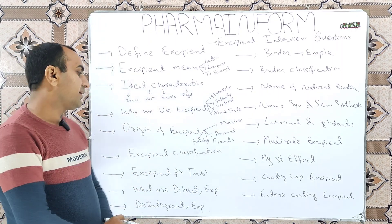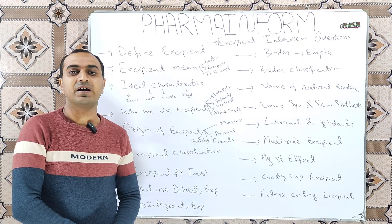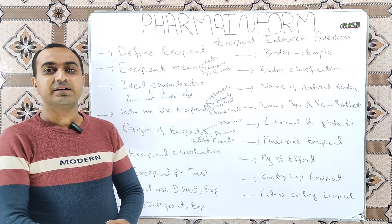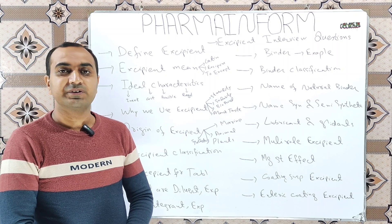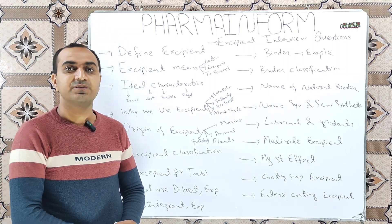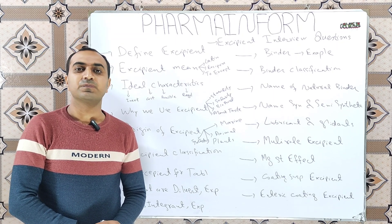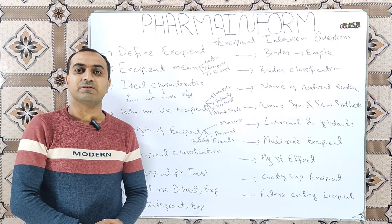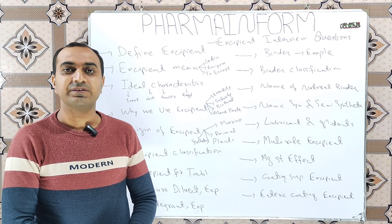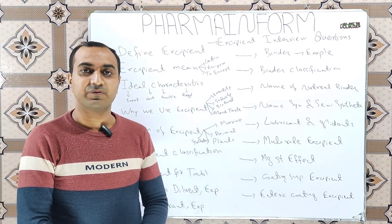The next question is: what is the classification of excipients? Excipients are classified depending upon their role, such as diluents, disintegrants, binders, lubricants, glidants, sweeteners, colorants, suspending agents, emulsifying agents, isotonic agents, and preservatives.